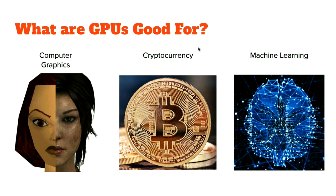So what are GPUs good for? We have the three big ones: graphics, which you see with Lara Croft and her evolution from 1996 to now; cryptocurrency, which is something NVIDIA never talks about as a use of their GPUs; and of course, machine learning.